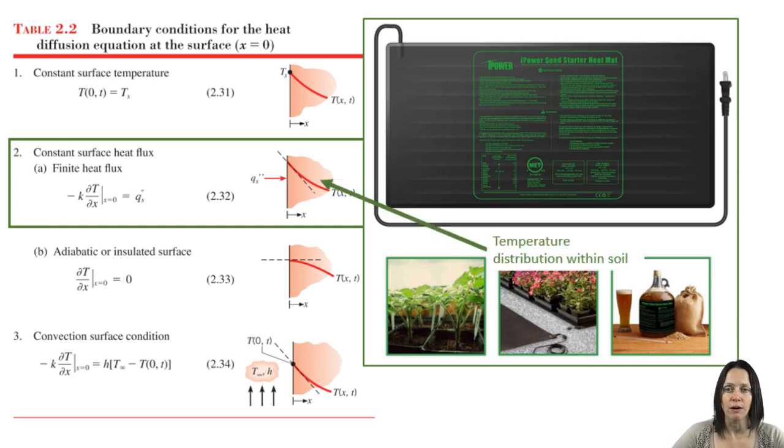So, in the picture here on table 2.2, the surface heat flux would be applied at the surface of the soil. We'll just ignore the very thin plastic tray between the seed starting mix, but we'll just call it soil. And the temperature distribution shown there is the temperature distribution in the soil.